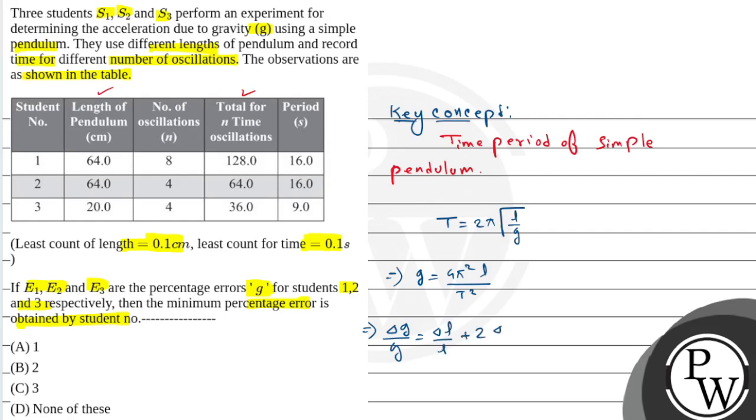Error is an additive quantity, so here the plus will be there. Del g by g percentage will be del L by L plus 2 del T by T into 100.